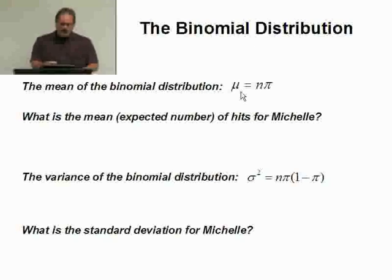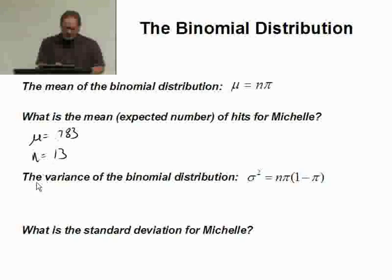So in this situation with Michelle that we just looked at, we said that pi was 0.783 and we know that n equals 13, there were 13 different trials. So, oops, I'm sorry, that's not mu, that's pi. I need to get my notation straight here.